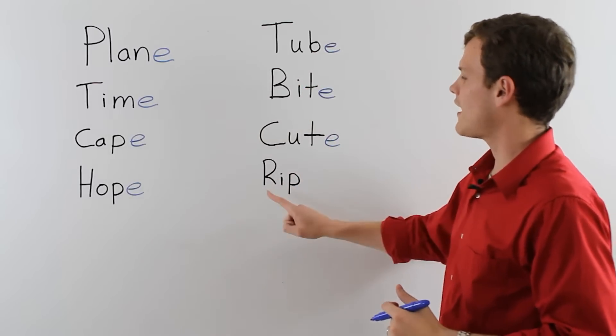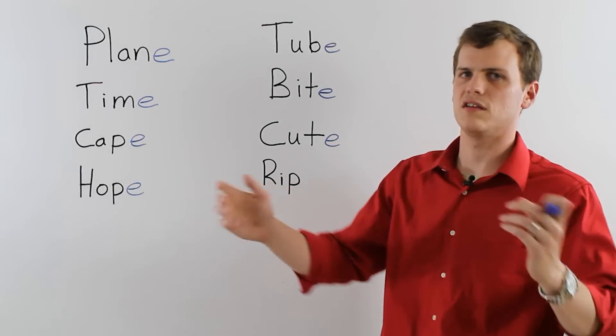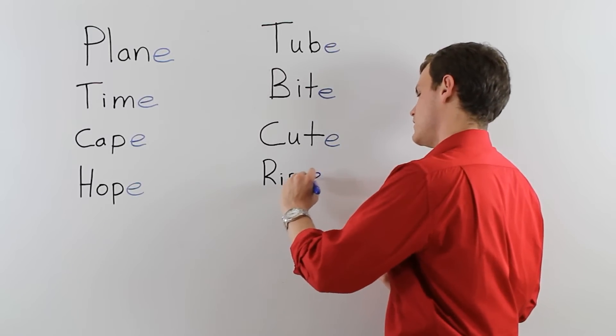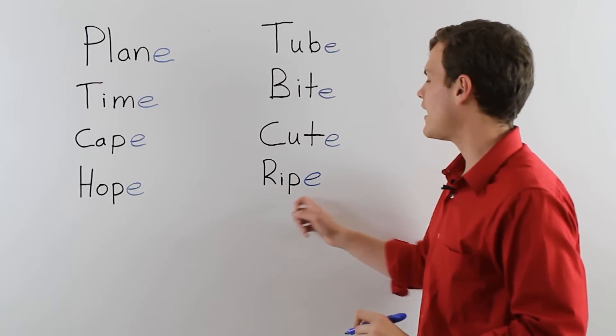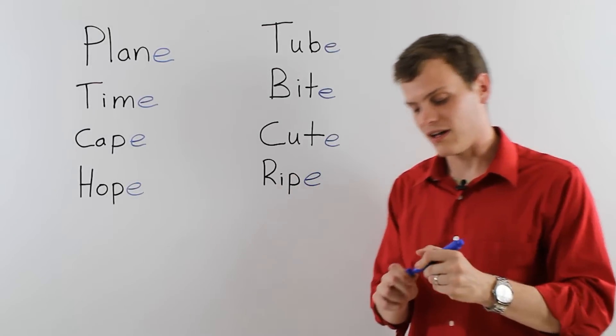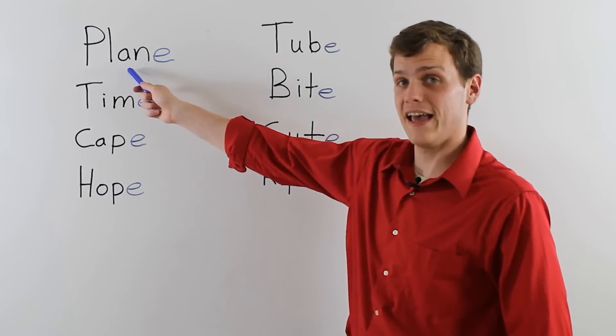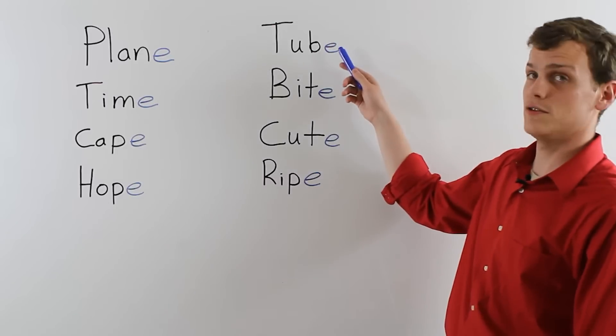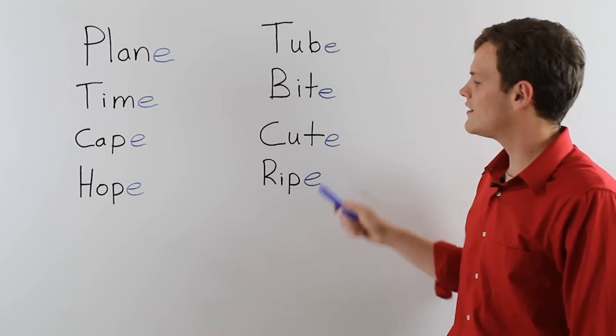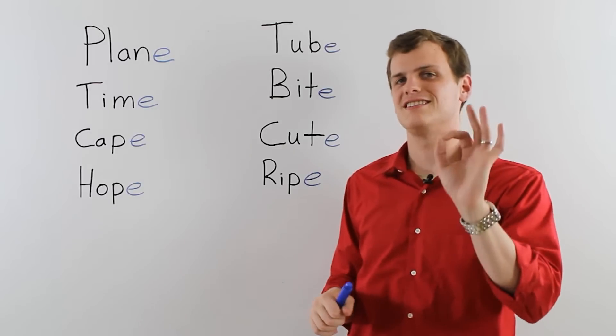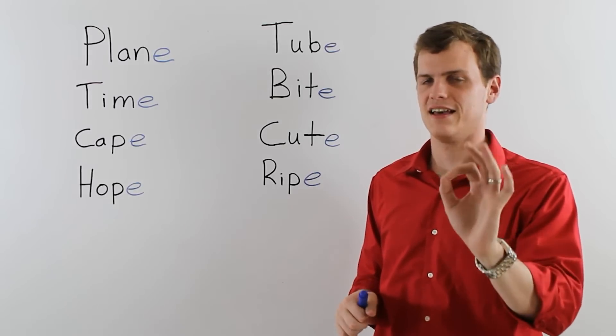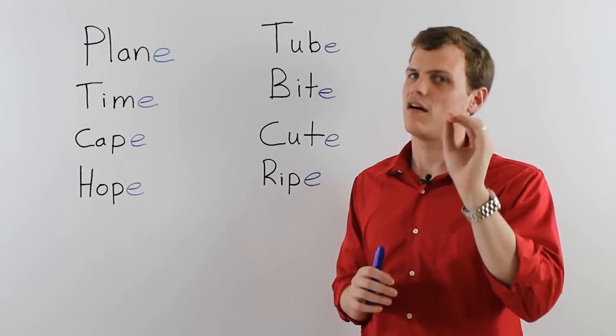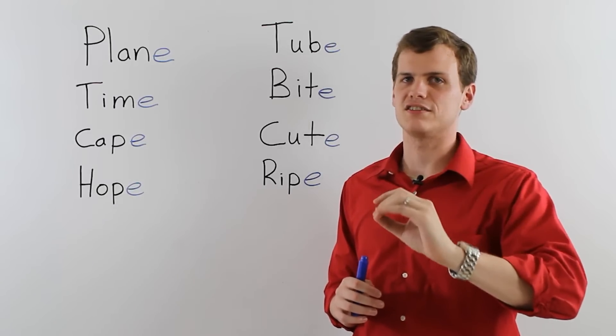And now, last one here. I've got rip. Rip, when you don't have scissors. Well, there's rip. And then there's ripe. Long vowel I with a silent E. So listen to me as I say these. We've got plane, time, cape, hope, tube, bite, cute, and ripe. Never did I say the E because it's silent. It's just there to make a long vowel. I hope that was helpful and I hope I see you again soon. Thank you very much.